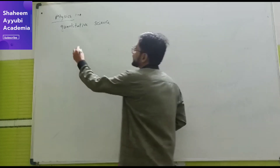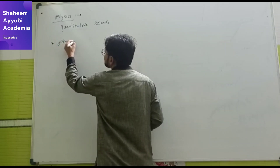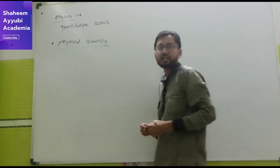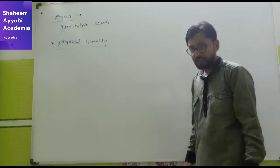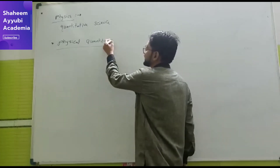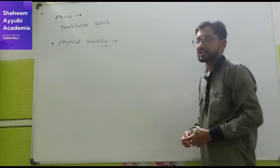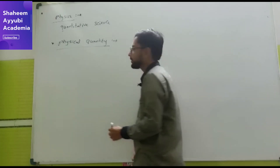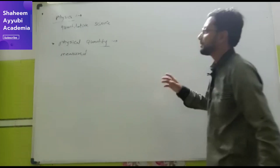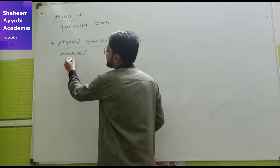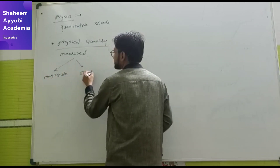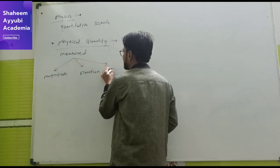Now we will move towards physical quantity. What is physical quantity? A quantity which can be measured in terms of magnitude or direction. For the measurement of any physical quantity, we require magnitude, direction, and unit.